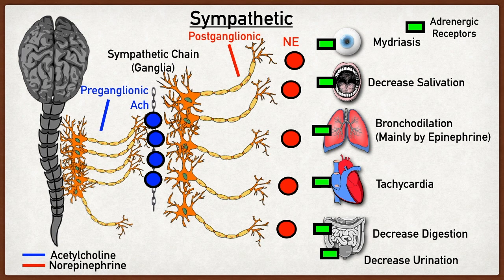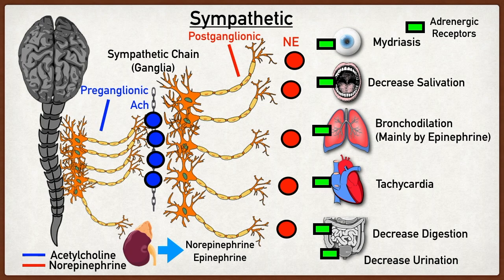There are also preganglionic sympathetic neurons that terminate on the adrenal medulla. This increases norepinephrine and epinephrine release from the adrenal medulla into the bloodstream. So now we have norepinephrine released by postganglionic sympathetic neurons, plus norepinephrine and epinephrine released by the adrenal medulla circulating in the bloodstream, and all of these catecholamines can bind to adrenergic receptors to induce that fight-or-flight response.